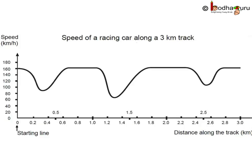As it is the second lap, the car is already in motion, so the graph starts from 160 kilometers per hour and not from zero. The car slowed down just after 200 meters — that is, 0.2 kilometers from the start of the new lap — which means it has to be a turn. So it slowed down and then accelerates again.